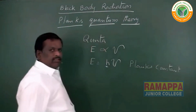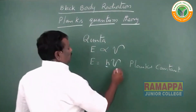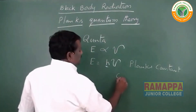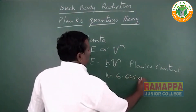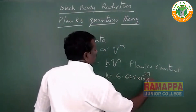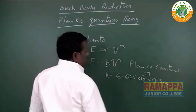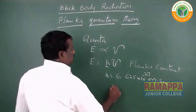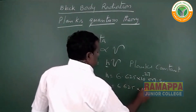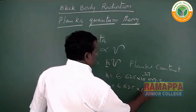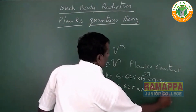H is known as Planck's constant. The value of this Planck's constant is 6.625 × 10⁻²⁷ erg second, or 6.625 × 10⁻³⁴ joule second.